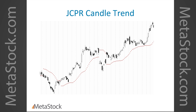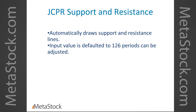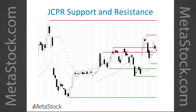Red dots above the price mean you're in a downtrend; if the red dots are below the price, prices are above the trend. It does a pretty good job of keeping basic up and down trends in check. You can control the parameters on Candle Trend slightly. The support and resistance defaults to 126 periods — about half a year of data. It automatically draws these lines for you. The red ones are resistance and the green ones are support; sometimes they're intermixed.